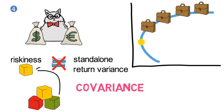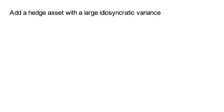You can add a hedge asset with a large idiosyncratic variance to a well-diversified portfolio and you would see that portfolio risk falls.